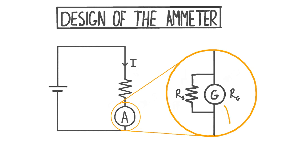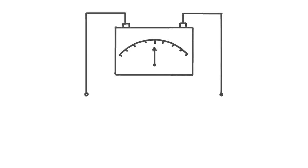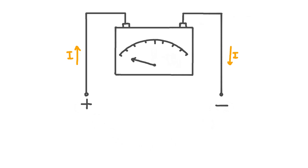Since ammeter design is based around a galvanometer, let's start by reminding ourselves how a galvanometer behaves. A galvanometer is an electromechanical device which responds to the direction and magnitude of current. If we apply a potential difference to a galvanometer, then the resulting current causes the needle on the galvanometer to deflect towards one end of the scale. If we reverse the polarity, thus reversing the direction of the current, the needle deflects toward the other end of the scale. We can see that the needle is pointed fully toward one end — it has maximum deflection.